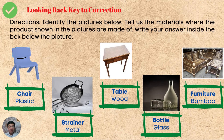The first picture is a chair, and it is made of plastic. The second picture is a strainer — it is made of metal. The third picture is a table — it is made of wood. The fourth picture is a bottle, and it is made of glass. The last picture is a furniture, and the furniture is made of bamboo. What's your score? Comment down below.